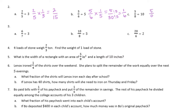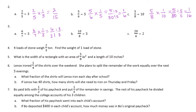Five-eighths divided by ten, or times one-tenth, is five-eightieths. Six-sevenths divided by three, or times one-third, is six-twenty-firsts. We can divide both six and twenty-one by three: six divided by three is two, twenty-one divided by three is seven, so two-sevenths.